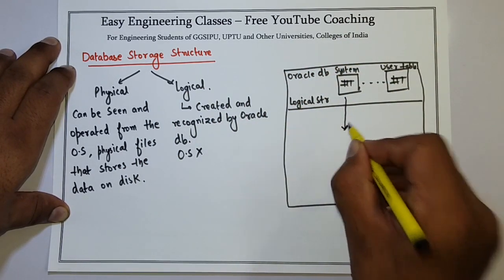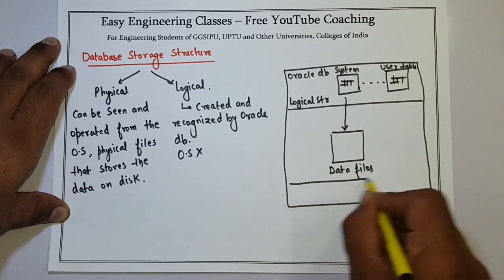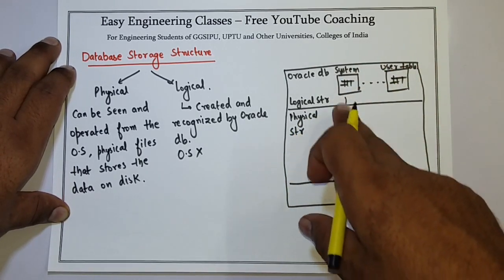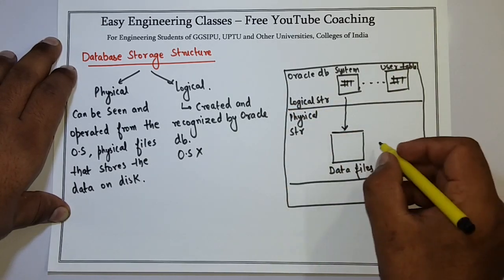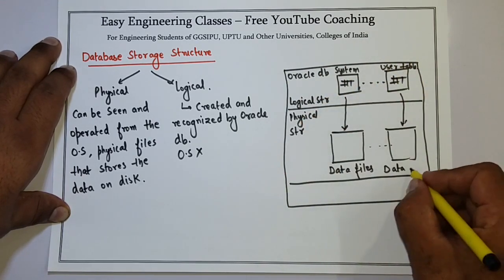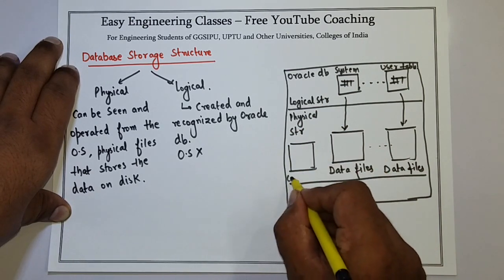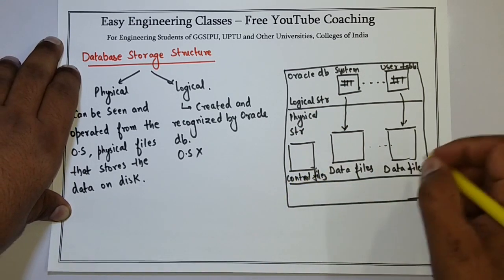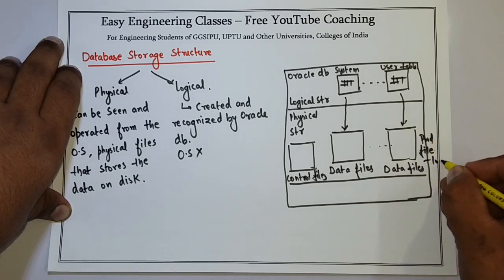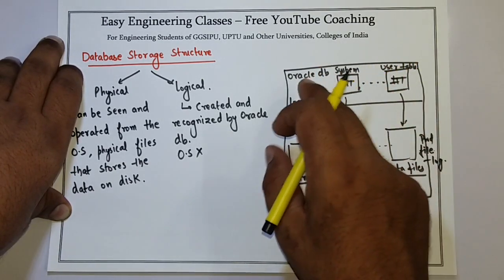These tables are linked with the physical data files which are present in the physical structure. Each logical file has an association with a data file in the physical structure, so there are n number of data files corresponding to the tables in the logical structure. The physical structure also contains control files, which control the operations of the database, as well as password files and log files.